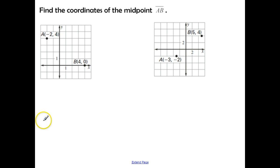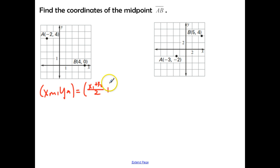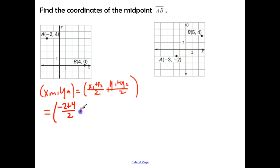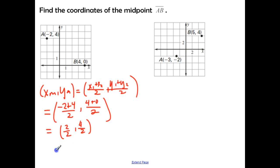We're going to take the information given and find the coordinates of the midpoint of segment AB. Remember the formula: xm, ym equals x1 plus x2 divided by 2, and y1 plus y2 divided by 2. It doesn't matter which one is point 1 and which one is point 2. So we take the two x coordinates and add them: negative 2 plus 4, divided by 2. And the y coordinates: 4 plus 0, divided by 2. Negative 2 plus 4 is 2, and 4 plus 0 is 4. Then 2 divided by 2 is 1, and 4 divided by 2 is 2. This is our final answer.